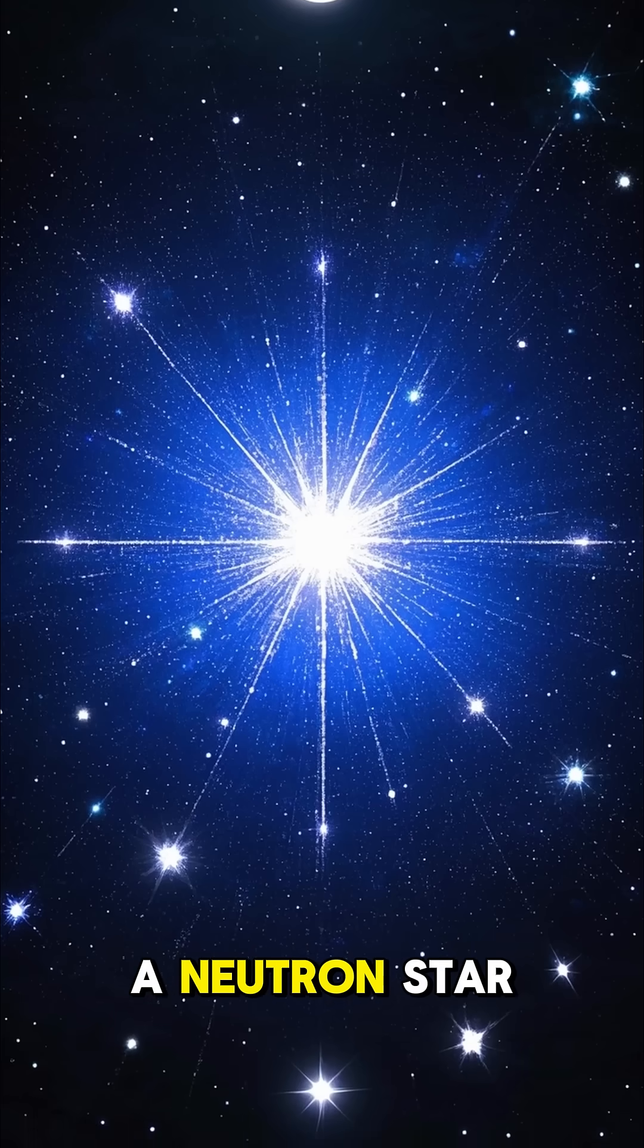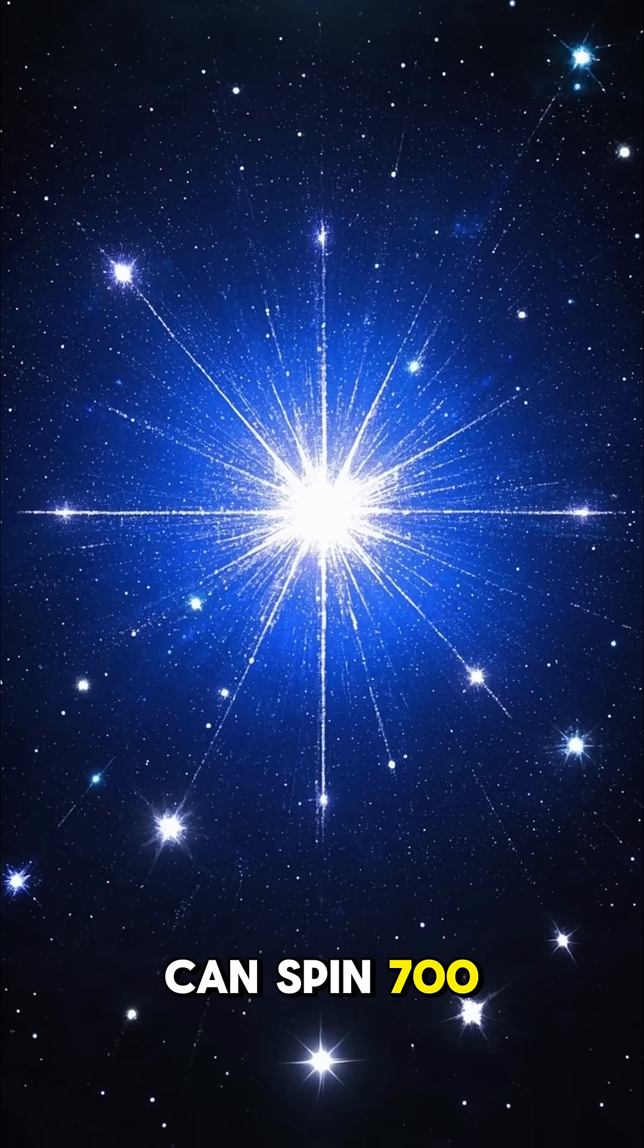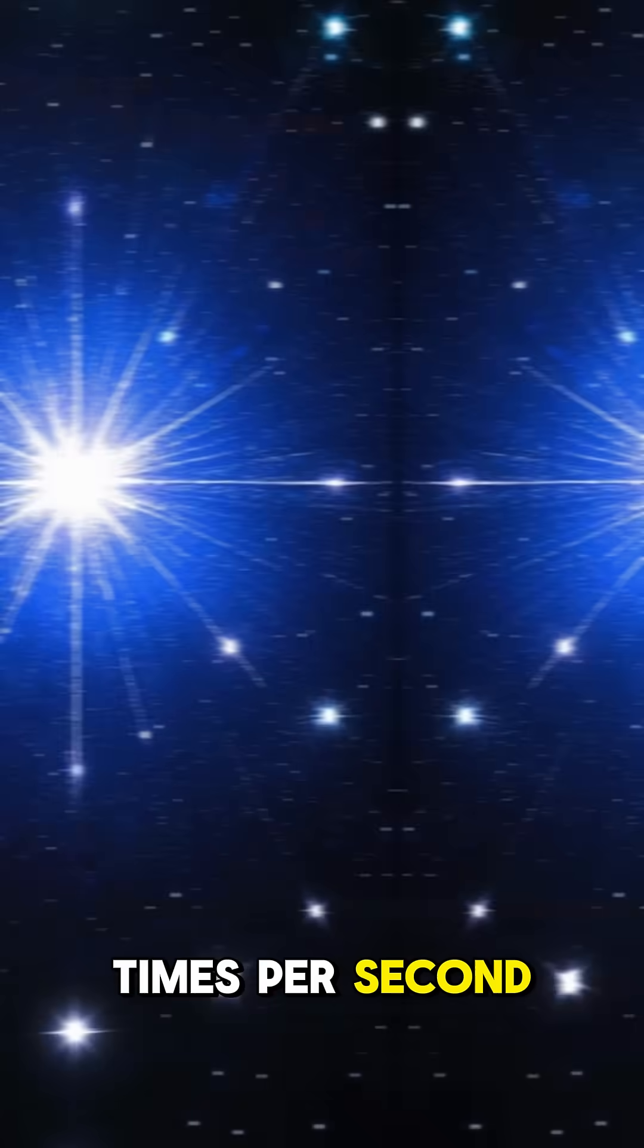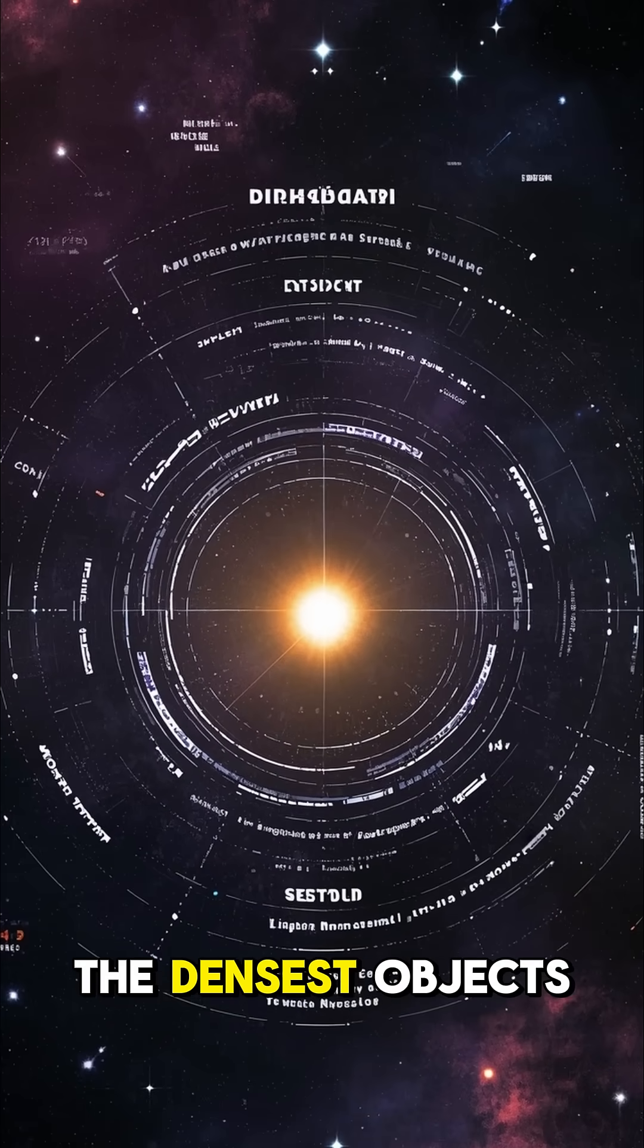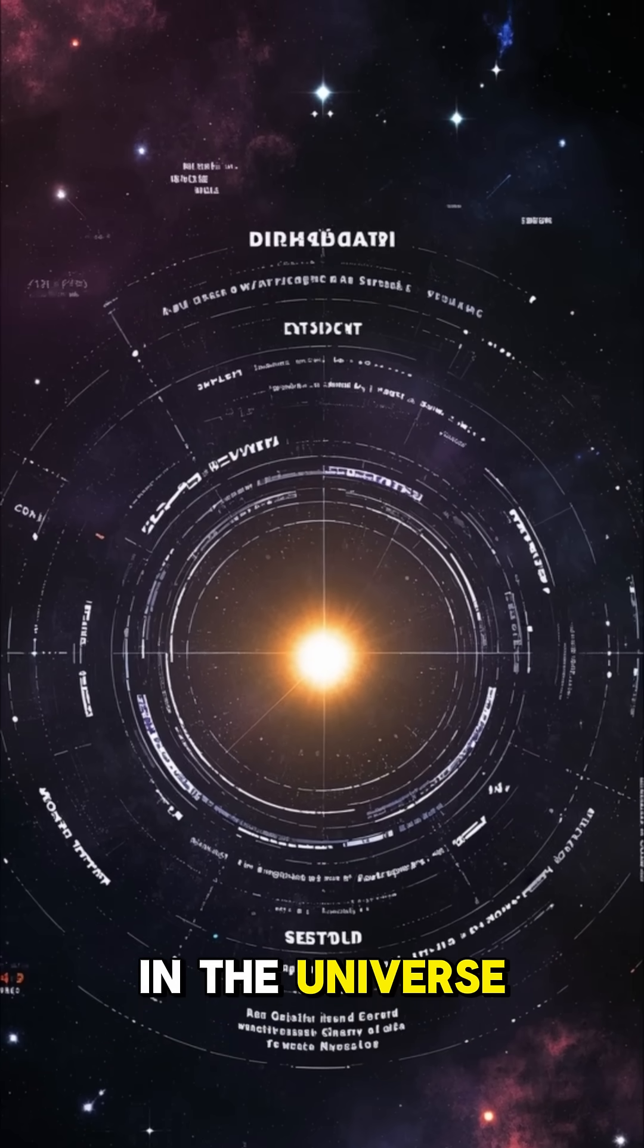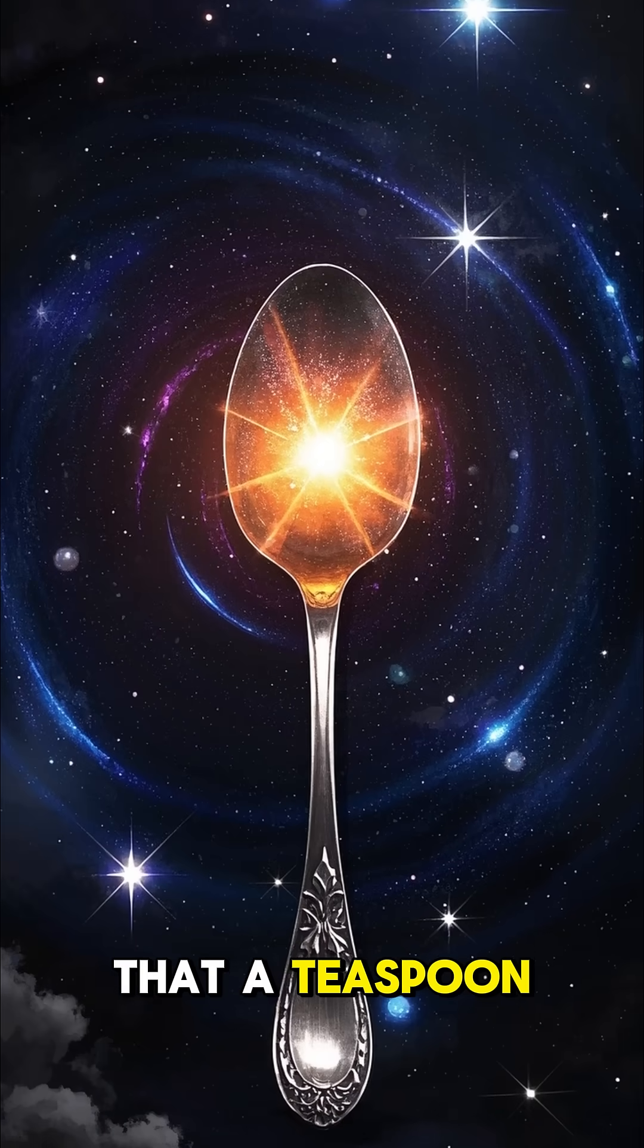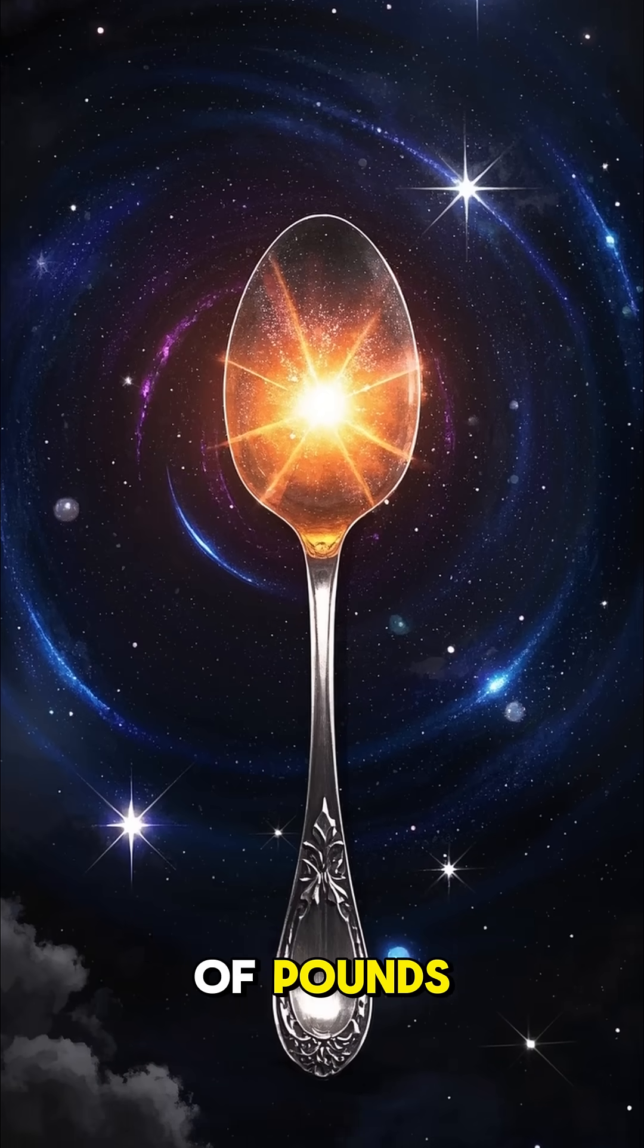Here's one fact about neutron stars: they can spin 700 times per second. Neutron stars are the densest objects in the universe. They're so dense that a teaspoon of their matter would weigh billions of pounds.